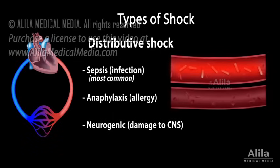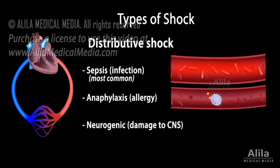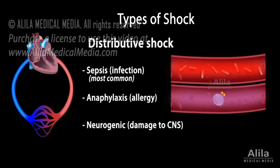In anaphylaxis, the immune system overreacts to an allergen, releasing massive amounts of histamine, which has similar effects to cytokines.